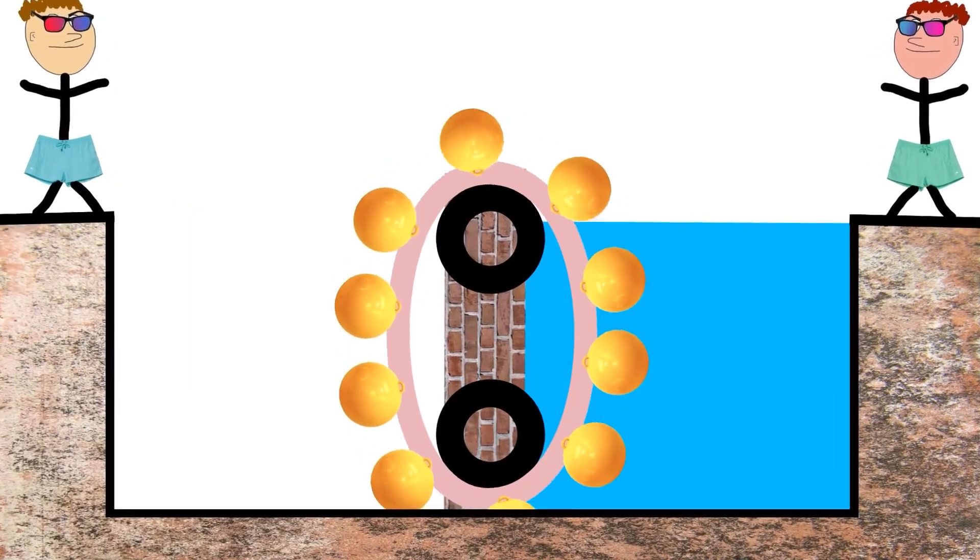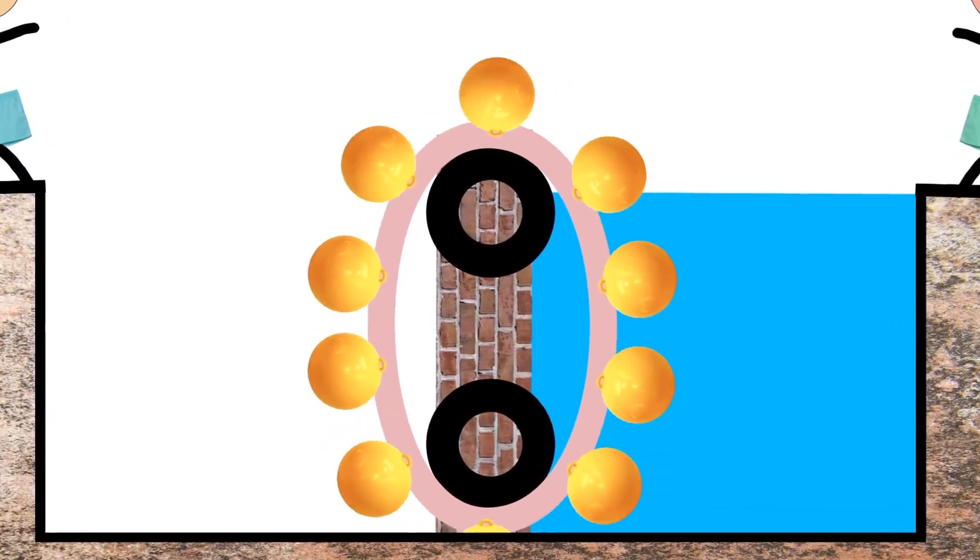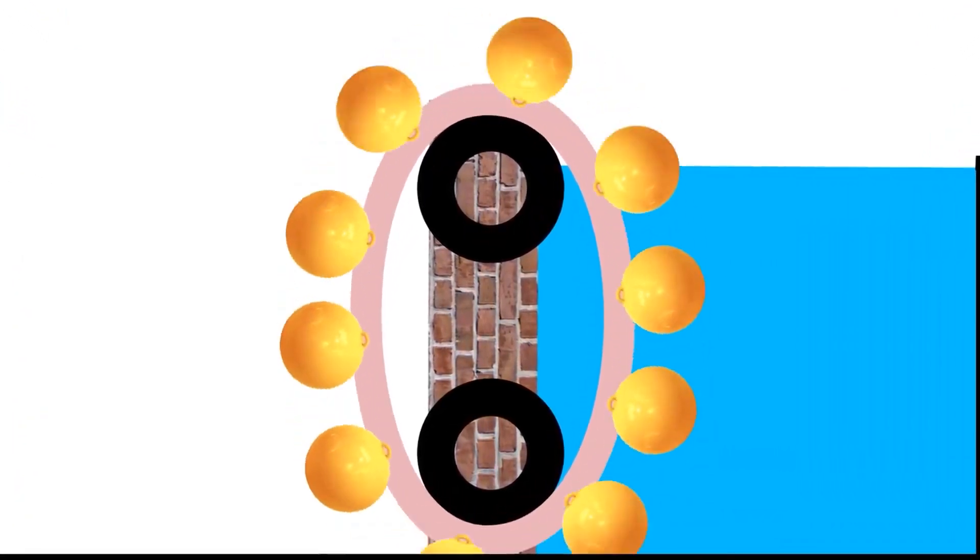Objects that do exist. One of them creates energy out of nothing, others simply conserve it, and others, it's impossible for them to work in this universe. Let's go back to our pool. What's happening here? What's the trick? Why don't we have generators like this in our houses?